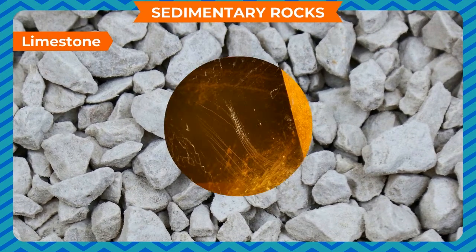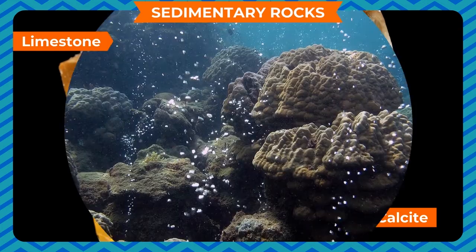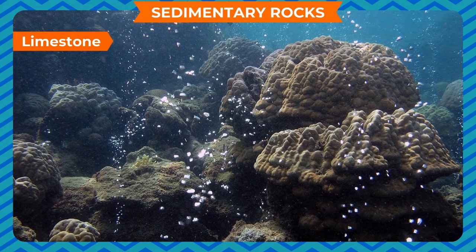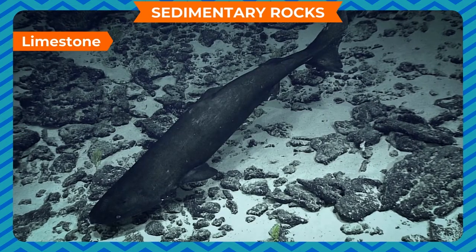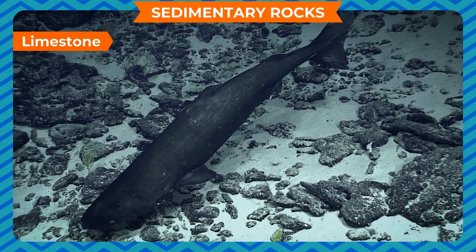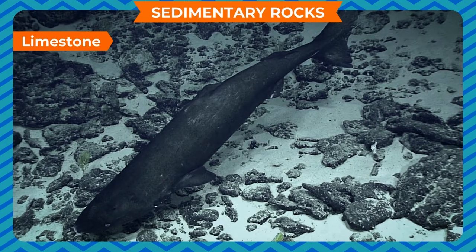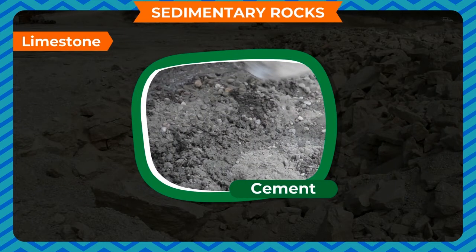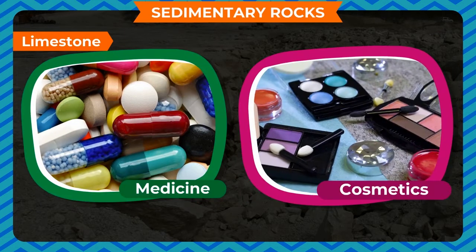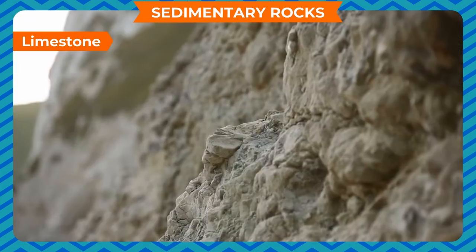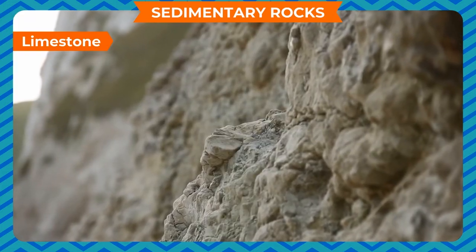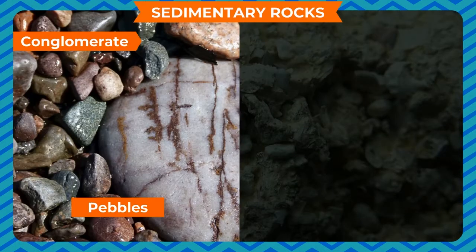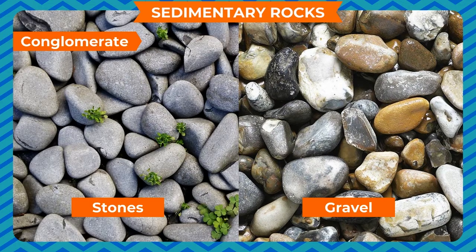Limestone rocks are soft sedimentary rocks made up of a mineral called calcite. Hard parts of dead tiny sea creatures are the sources of calcite — they settle in the sea beds and form layers to create limestone. Limestone is used for making glass, whitewash, and cement. It is also used in medicine and cosmetics industries. Chalk is also a soft form of limestone.